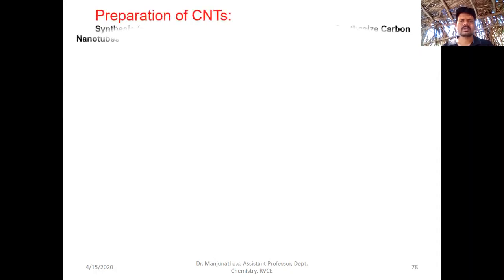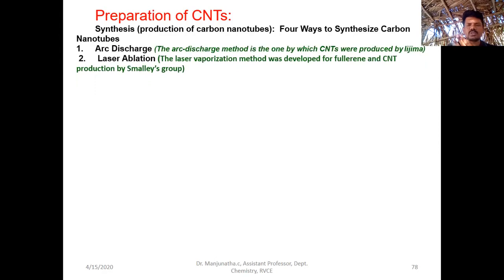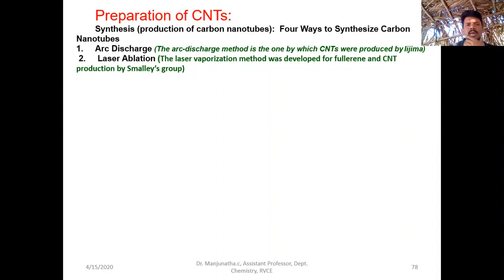Let us look at the preparation of these carbon nanotubes. Carbon nanotubes are prepared by various methods. Sumio Iijima, who invented single-walled and multi-walled carbon nanotubes for the first time, prepared those two materials by arc discharge method. Later, the Smalley group, who were pioneers in this field, prepared carbon nanotubes by laser ablation method. These two are physical methods and are relatively costly.